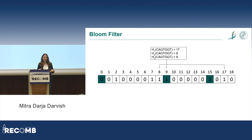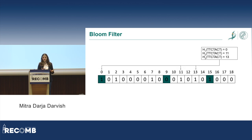When you insert a k-mer, you apply a number of hash functions — here it's three — and hash the k-mer to the positions the hash values point to, flipping those bits to one. I do this for each k-mer inserted.